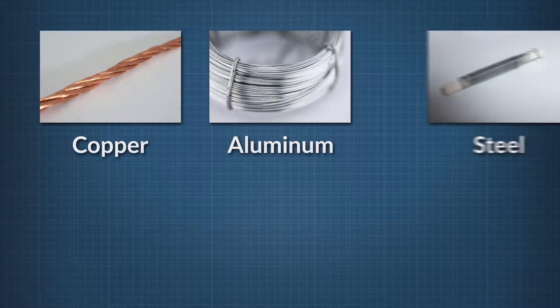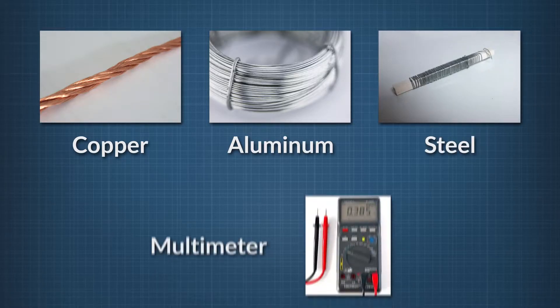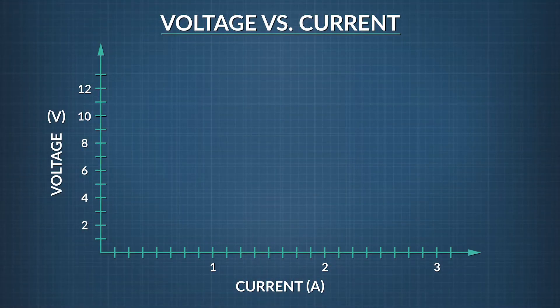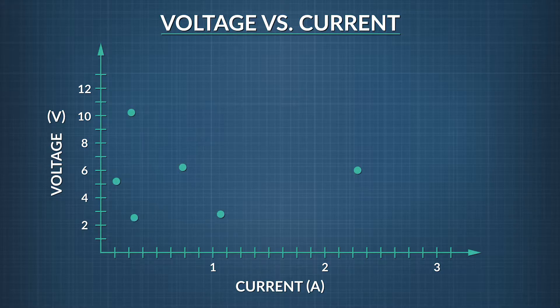We can do something similar to what Ohm did when he spent all that time recording data. Let's measure the currents of some wires of different materials and lengths — here's copper, aluminum, and steel — using our trusty multimeter. Let's hook up the leads and see what we get, and then we'll fill in the points on our graph of voltage versus current, adding the measurements for each material.